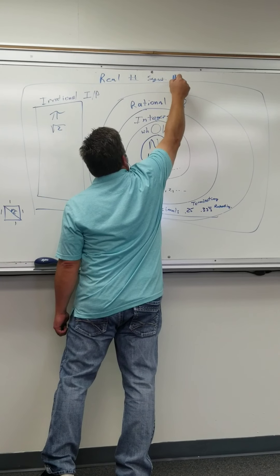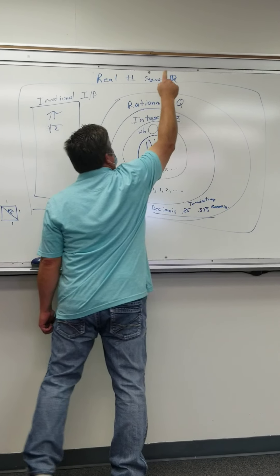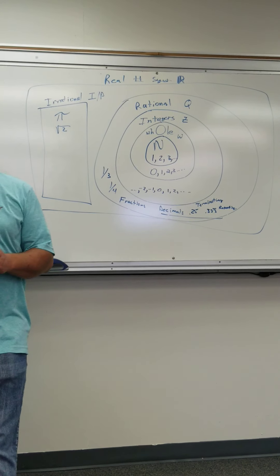They're all real, and the way you draw real is like that, with kind of a double line by the R, and that's called real numbers.